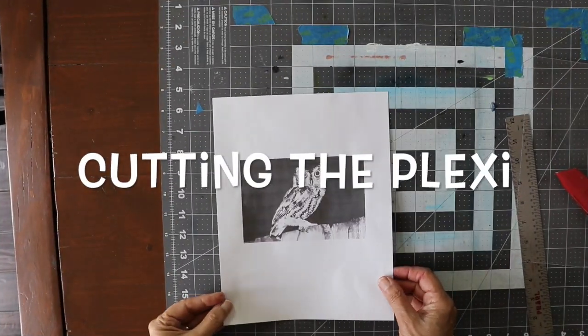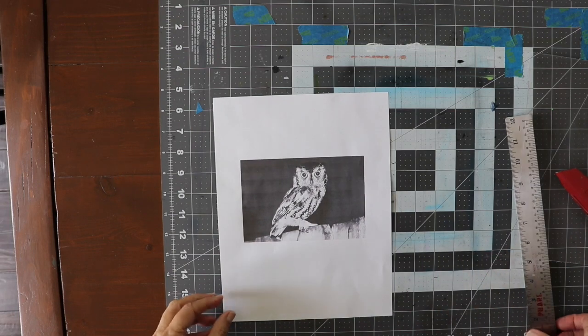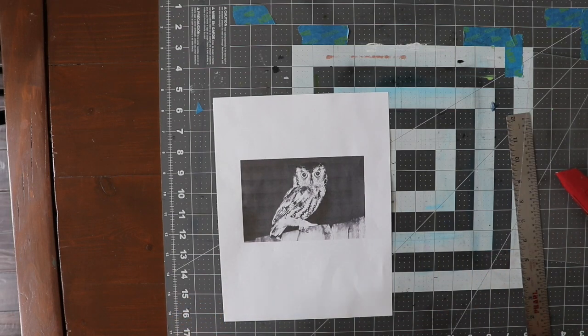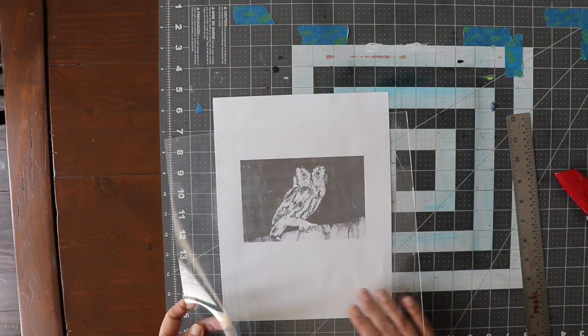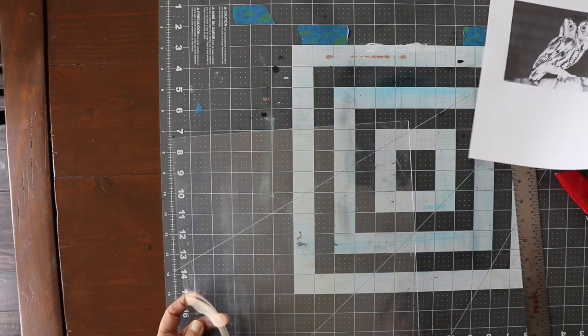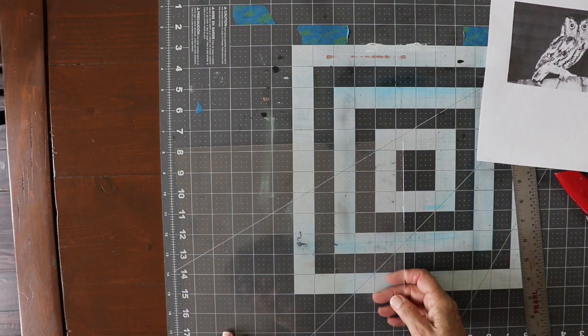I'm going to make an etching of the screech owl and the first thing I'm going to need to do is to cut my plexiglass. This is plexiglass that was once a plexi that was in an IKEA frame.